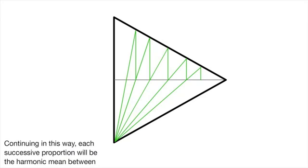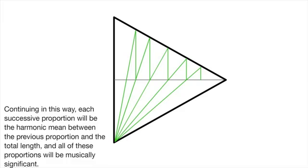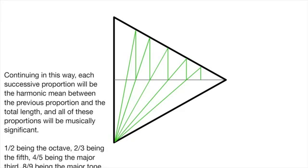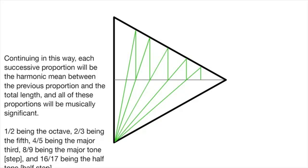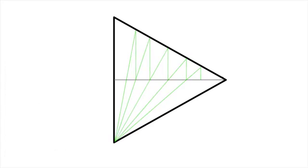By drawing this funny little form, he discovered something of great importance. He writes, continuing in this way, each successive proportion will be the harmonic mean between the previous proportion and the total length, and all of these proportions will be musically significant. 1 over 2 being the octave, 2 over 3 being the fifth, 4 over 5 being the major third, 8 over 9 being the major tone or step, and 16 over 17 being the half tone or step. In other words, he discovered the geometries of music, or at least one aspect of them.